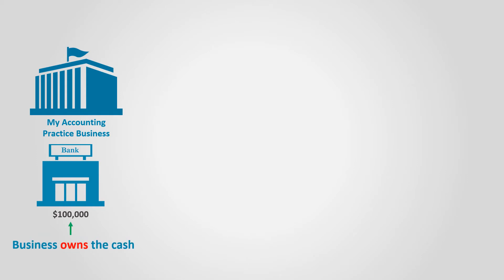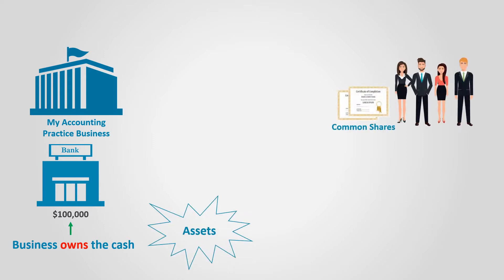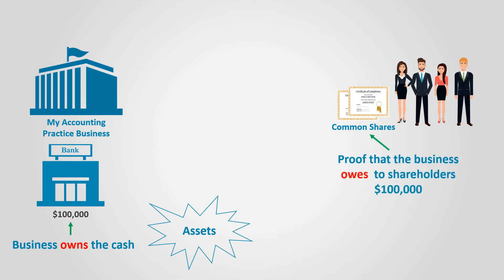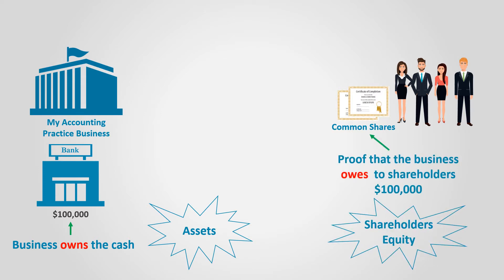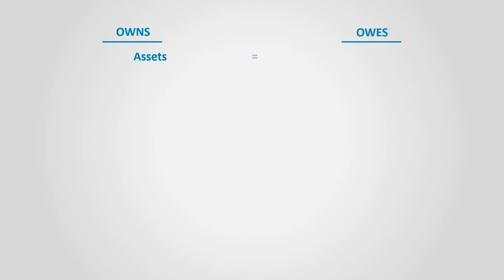The business now owns cash of $100,000. We can generally say that anything the business owns is known as an asset. The shareholders own the business shares, which prove that the business owes the shareholders the amount they invested, which is $100,000. We can now present this relationship in the form of an equation where we show on one side what the business owns and on the other side what the business owes to the owners and others.